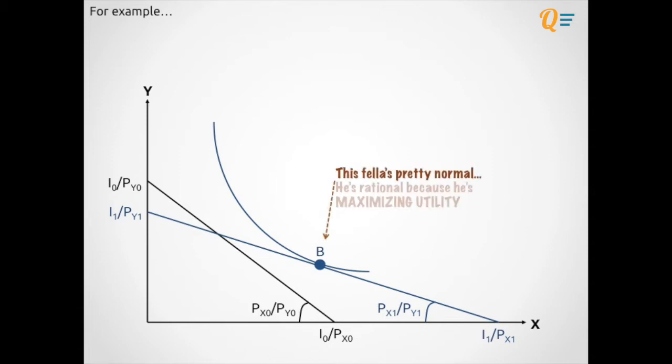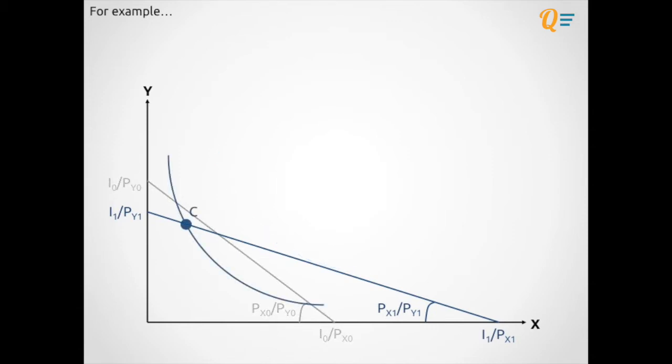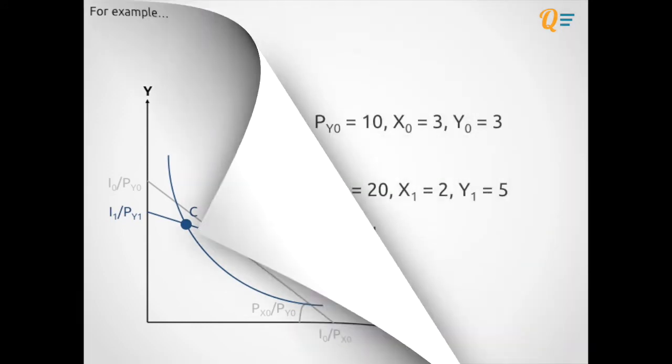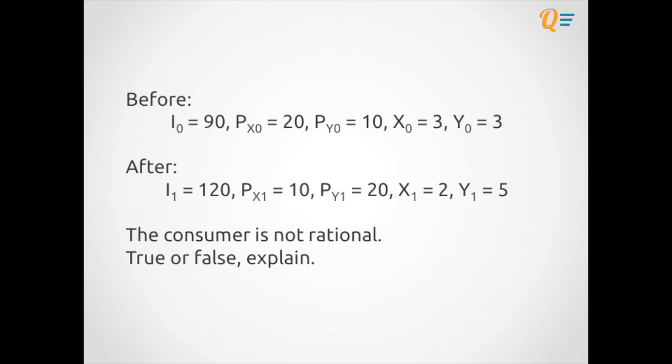When this individual maximizes his utility, he's pretty normal, right? So what we say is that this individual is rational because he is maximizing his utility. Let's look at a case whereby this individual might be completely irrational. So instead of going to B, he goes to point C. I think it's really easy for you to see that going to point C is completely irrational because he's not maximizing his utility. The indifference curve is not tangent to the budget constraint. So if he's at point C, this guy is irrational because he's not maximizing his utility.